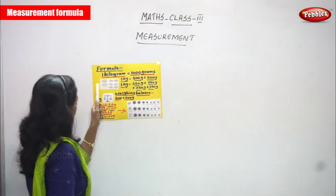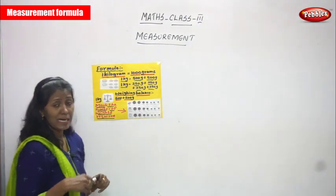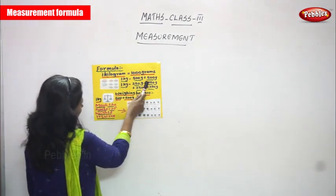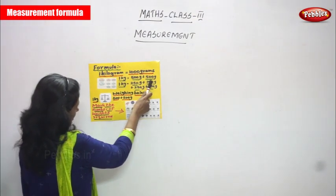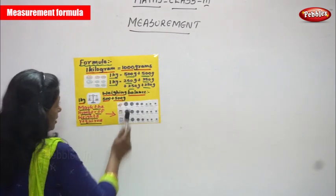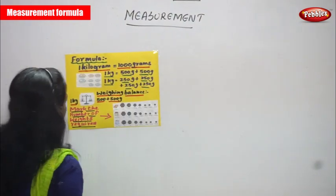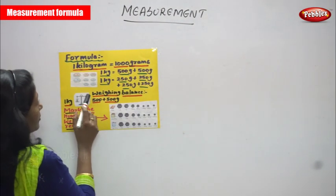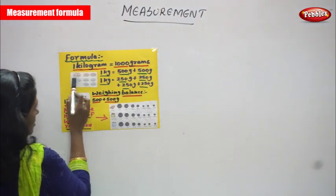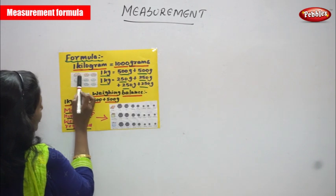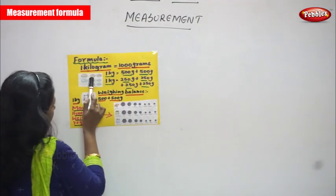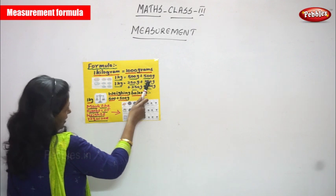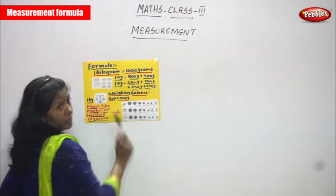Look at the diagrams. This is a weighing stone. One kilogram is equal to 500 gram plus 500 gram. If you add them together you can get one kilogram. So this one kilogram weighing stone is split into two — one is 500 gram and the other one is 500 gram.